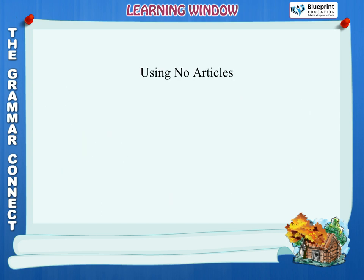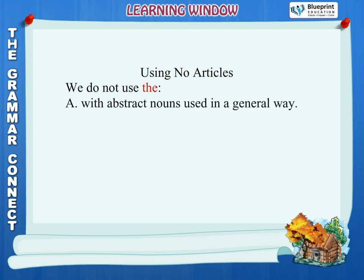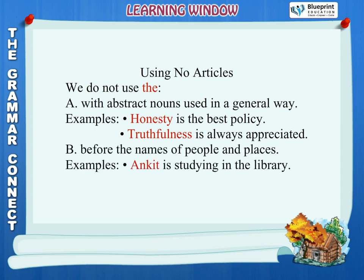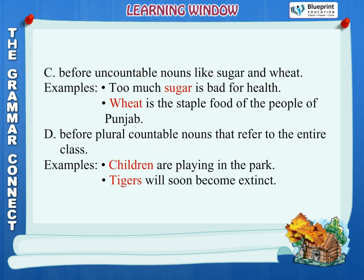Using no articles. We do not use the. Rule A: With abstract nouns used in a general way. Examples: Honesty is the best policy. Truthfulness is always appreciated. Rule B: Before the names of people and places. Examples: Ankit is studying in the library. India is a country of diversities.